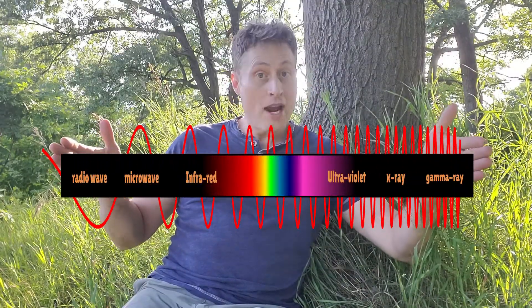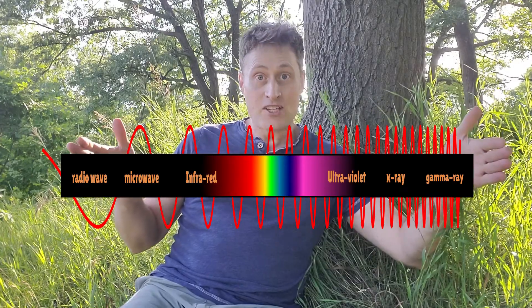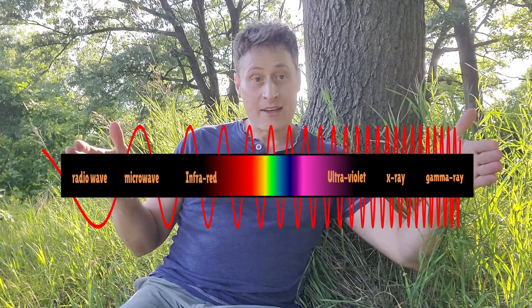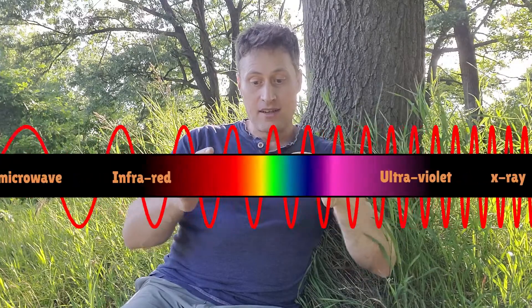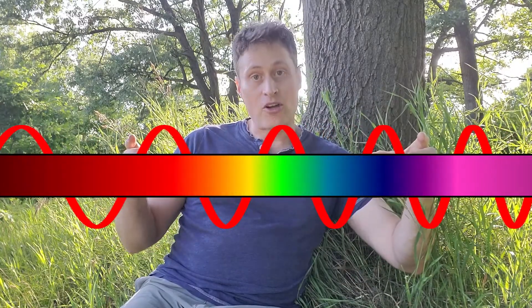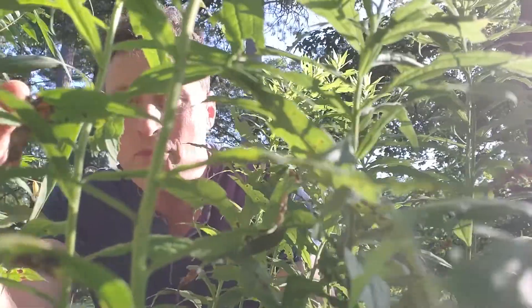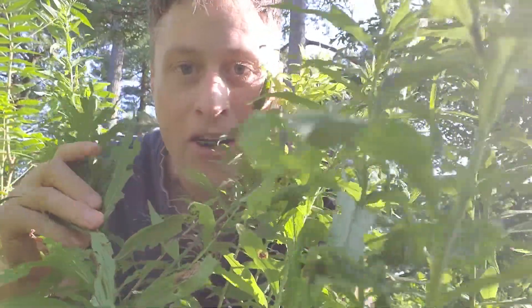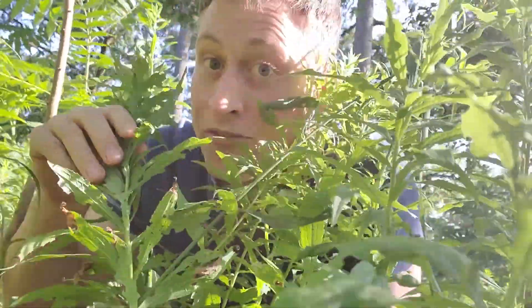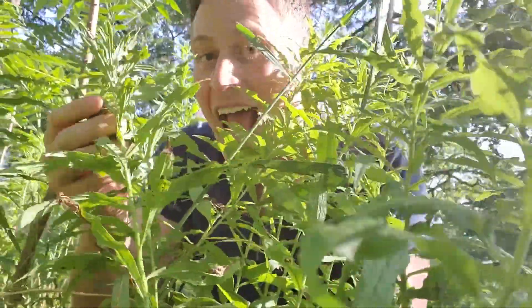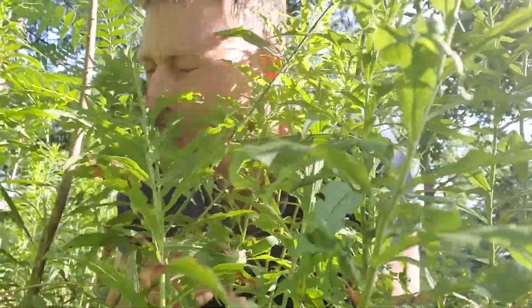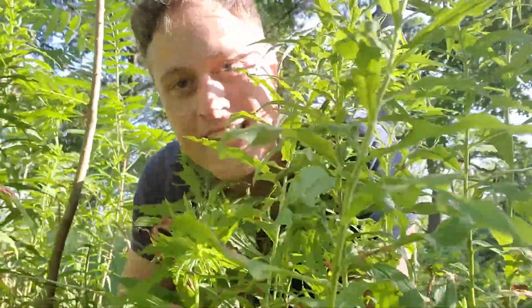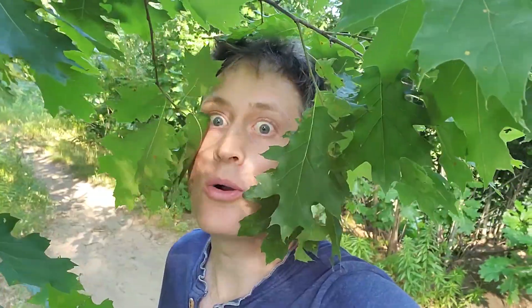Light is part of the electromagnetic spectrum. Radio waves, x-rays, visible light — it's all the same thing. Visible light is broken up into several colors. Think of them like channels on a radio station. So when we see something green, what we're actually seeing is the green part of the electromagnetic spectrum reflecting off that thing — that's why we see it as green.